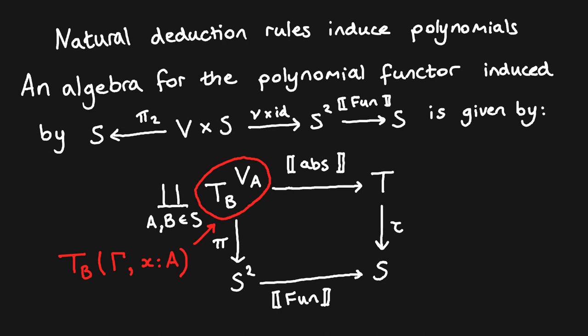I've just covered two examples here, but in general every natural deduction rule for a simple type theory introduces a polynomial in a similar manner. The general construction is slightly more complicated, so for the full details I'll refer you to our paper.